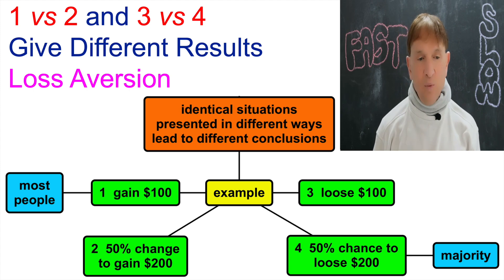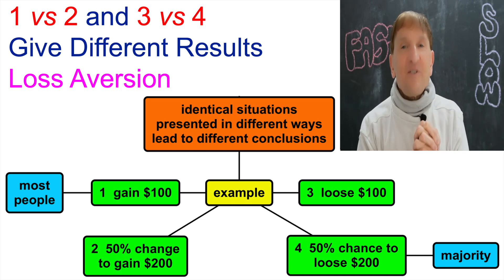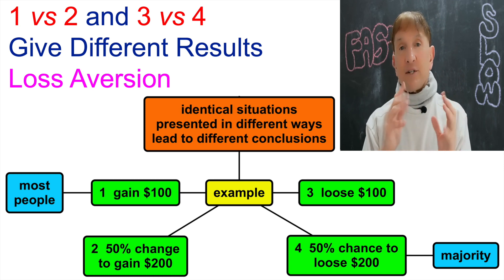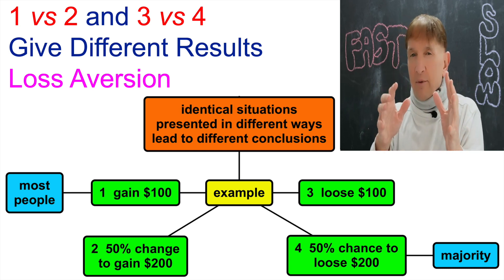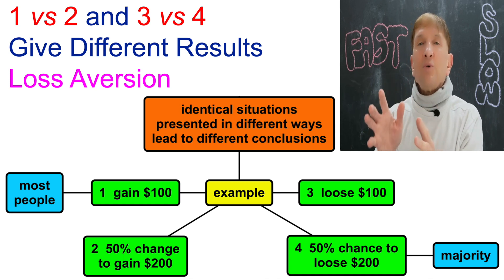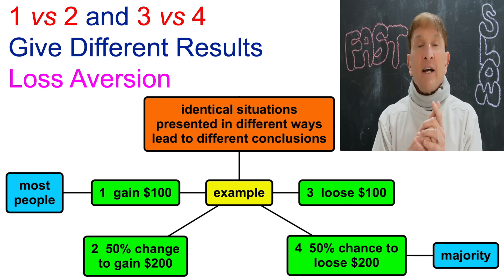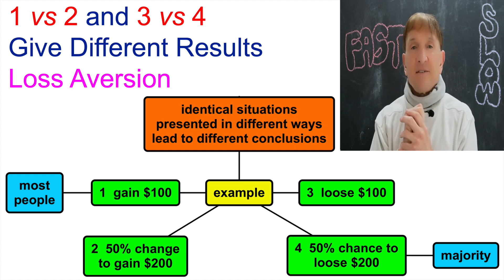Let's suppose a situation. We take a sample of people, and we offer them, lucky day, $100 gain guaranteed, no strings attached. Or you can choose a 50% chance at gaining $200. And then we take another cohort of people. Not so lucky day. Sorry, you're going to lose $100 for sure, unless you take the option to risk $200 at a 50% chance.